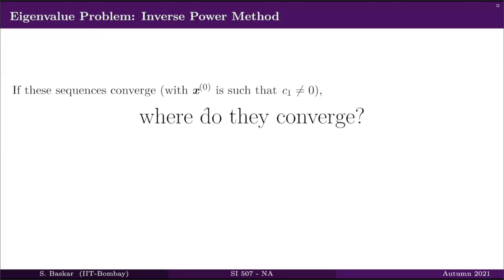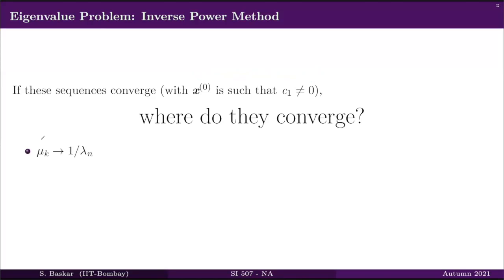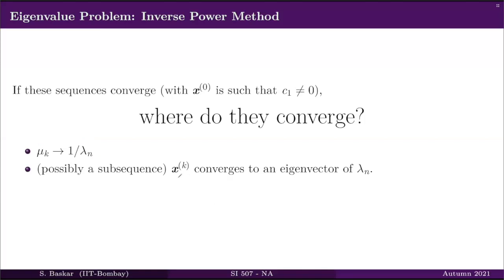If these sequences converge and our choice x_0 was such that c_1 is not equal to 0, then the inverse power method will converge to the dominant eigenvalue of the matrix A inverse. So mu_k will converge to 1/lambda_n, where lambda_n is the smallest eigenvalue in absolute value. And x_k will converge to an eigenvector of lambda_n.